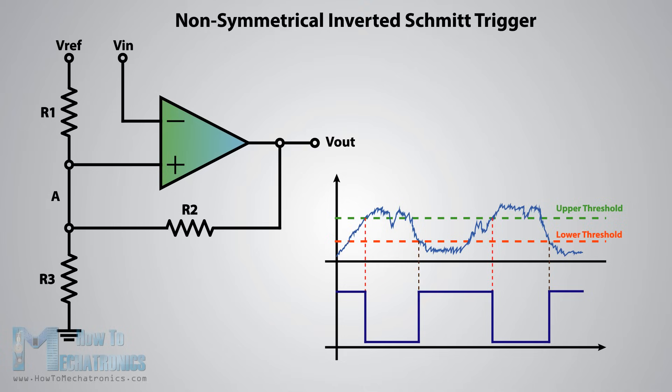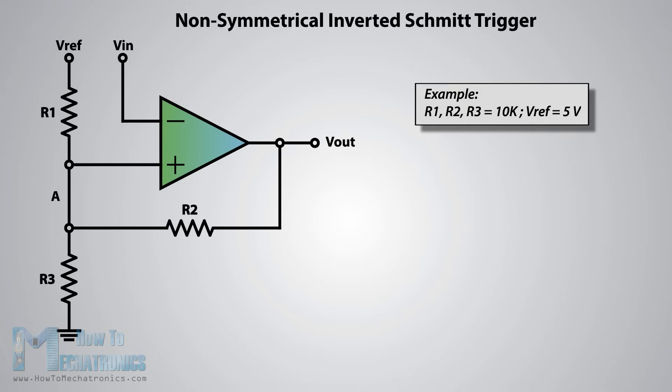Here's an example of how we can calculate the thresholds. The VREF and the VCC will be 5 volts and the three resistors will be the same, 10k ohms. So what we need to calculate now is the voltage at the A node.